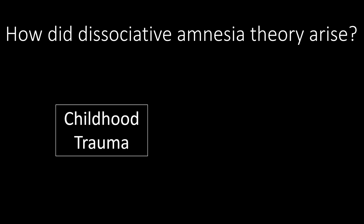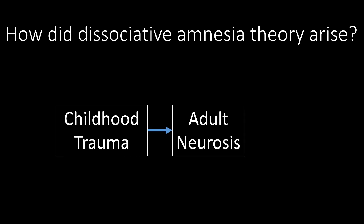The central theory to understand how this probably happened is the theory Freud held: that childhood trauma or abuse is the major cause of psychopathology, or what they used to call adult neurosis. This is not a bad theory if left as is — it's falsifiable and scientific, with no invisible entities. Childhood trauma is measurable, adult pathology is measurable, so this is a reasonable, scientific starting point.